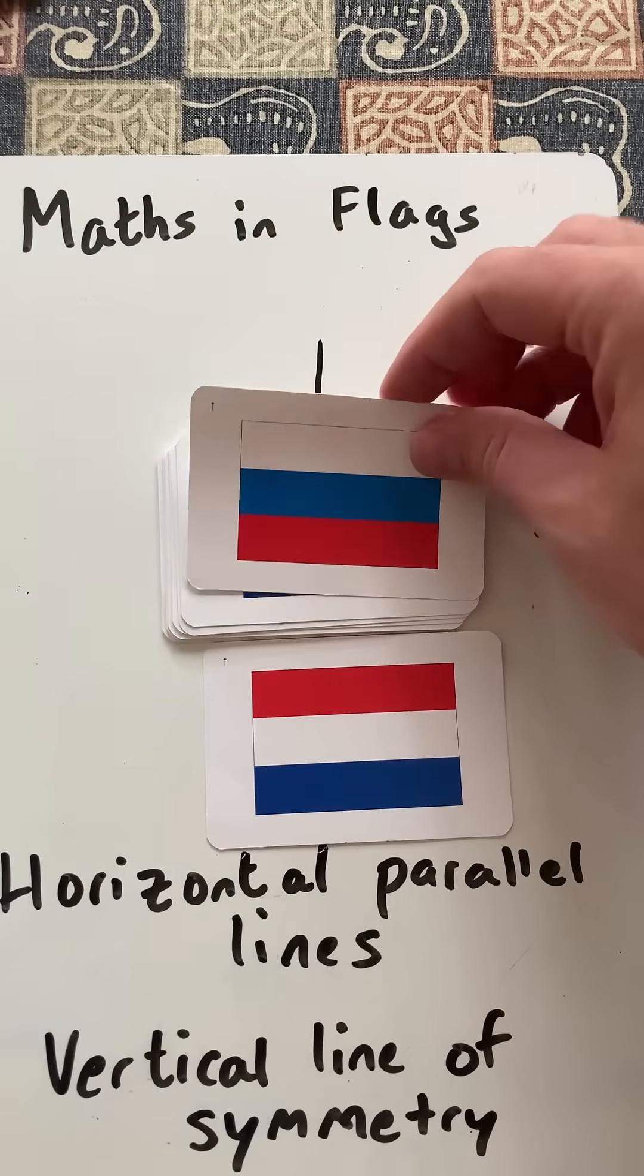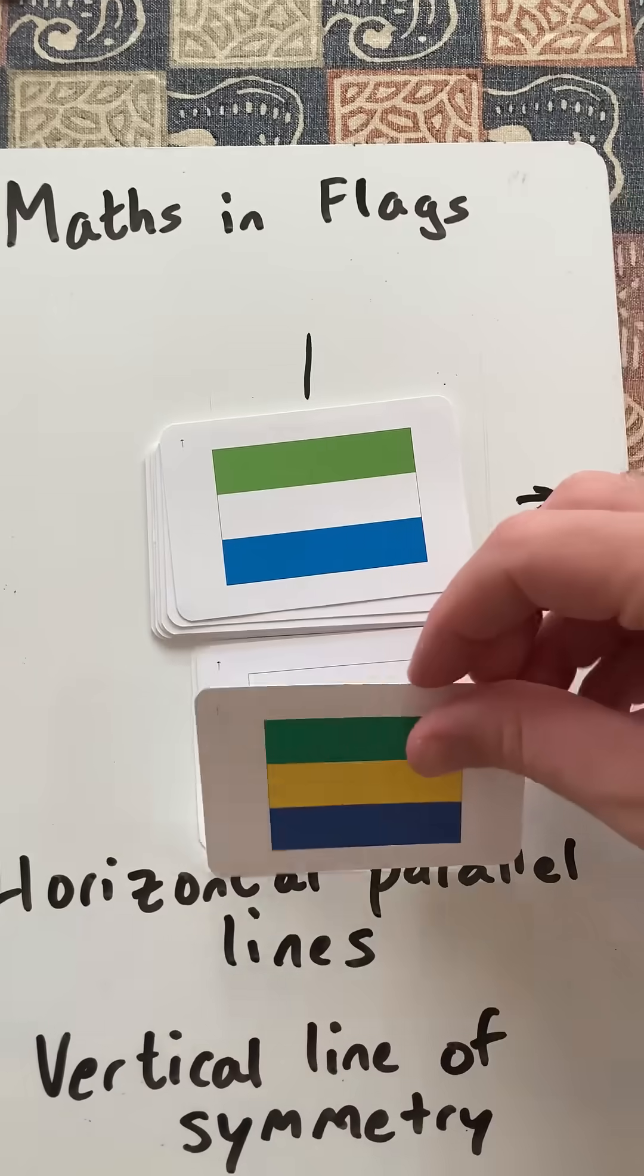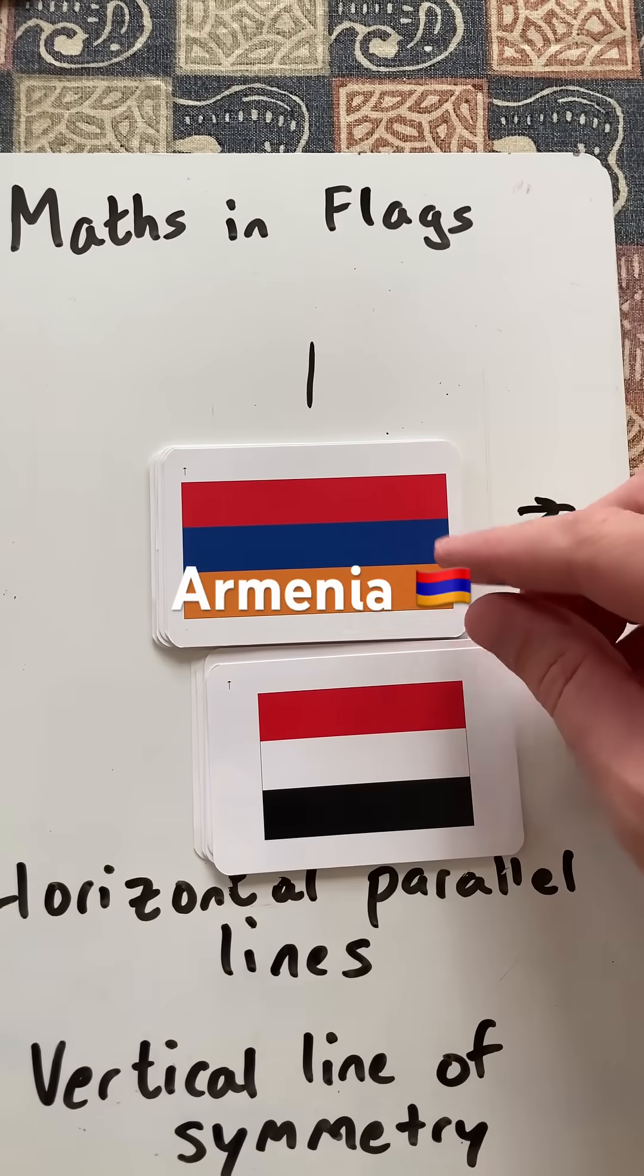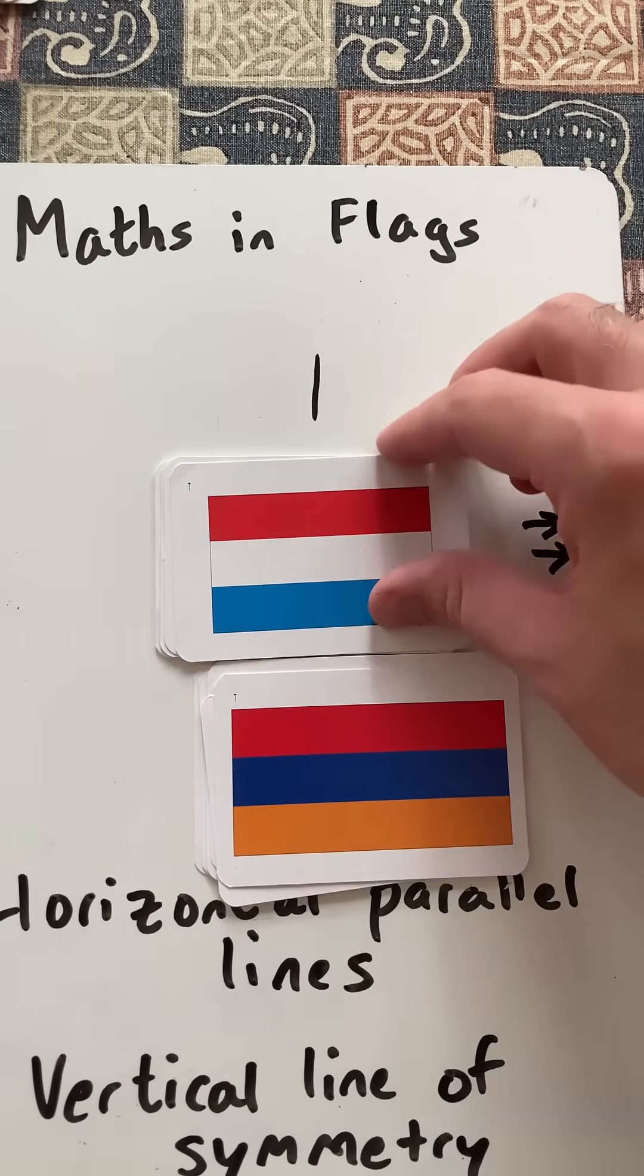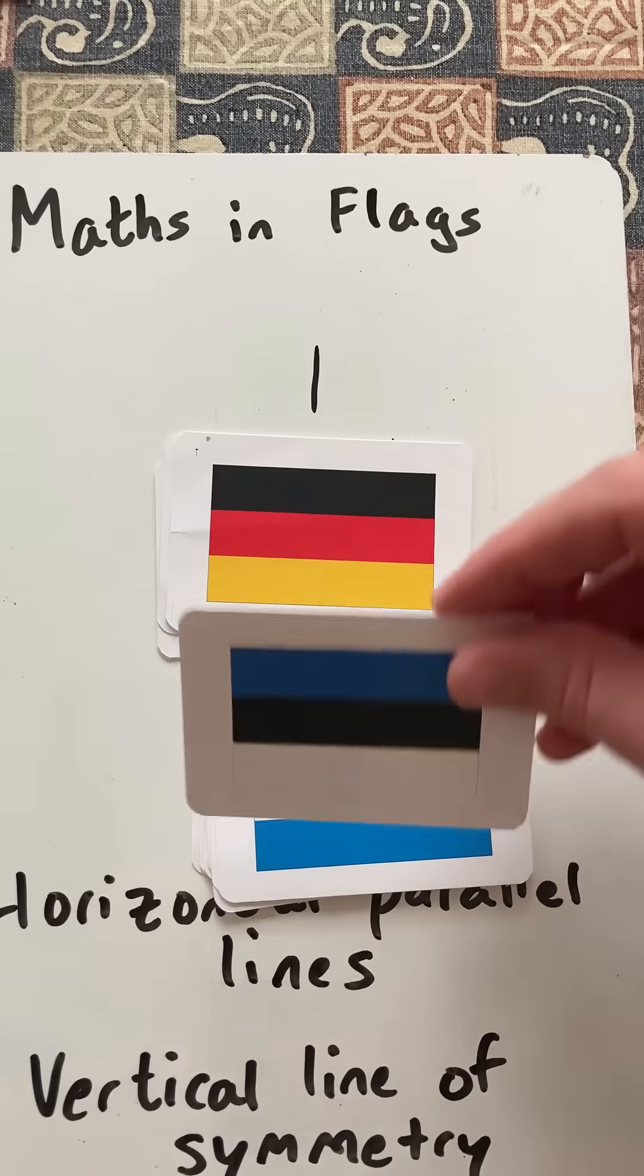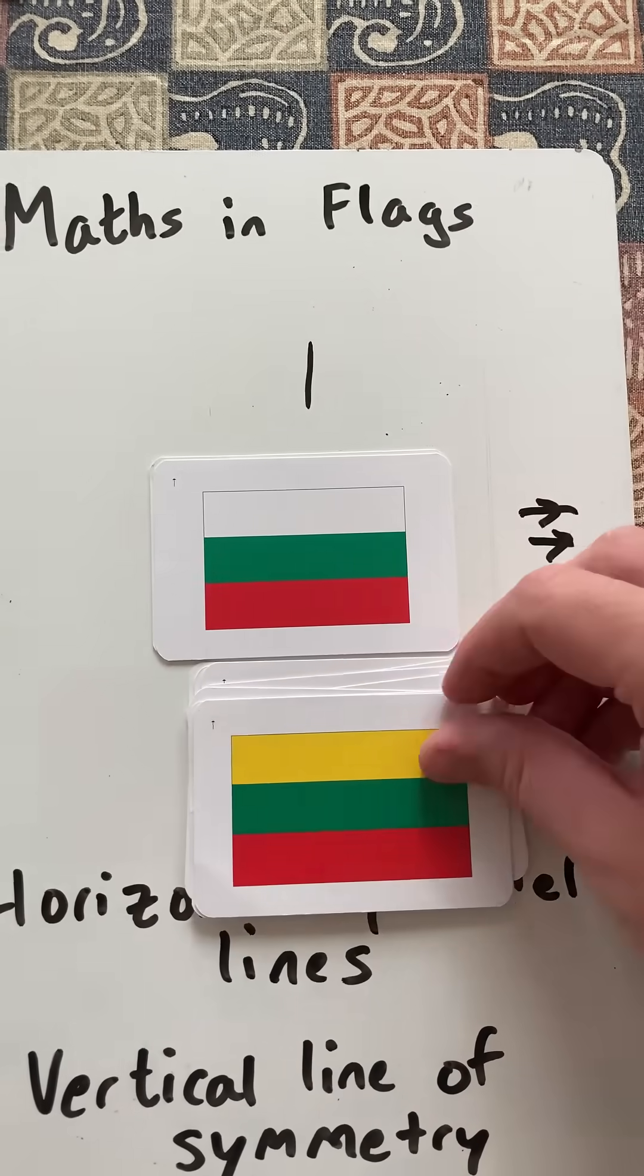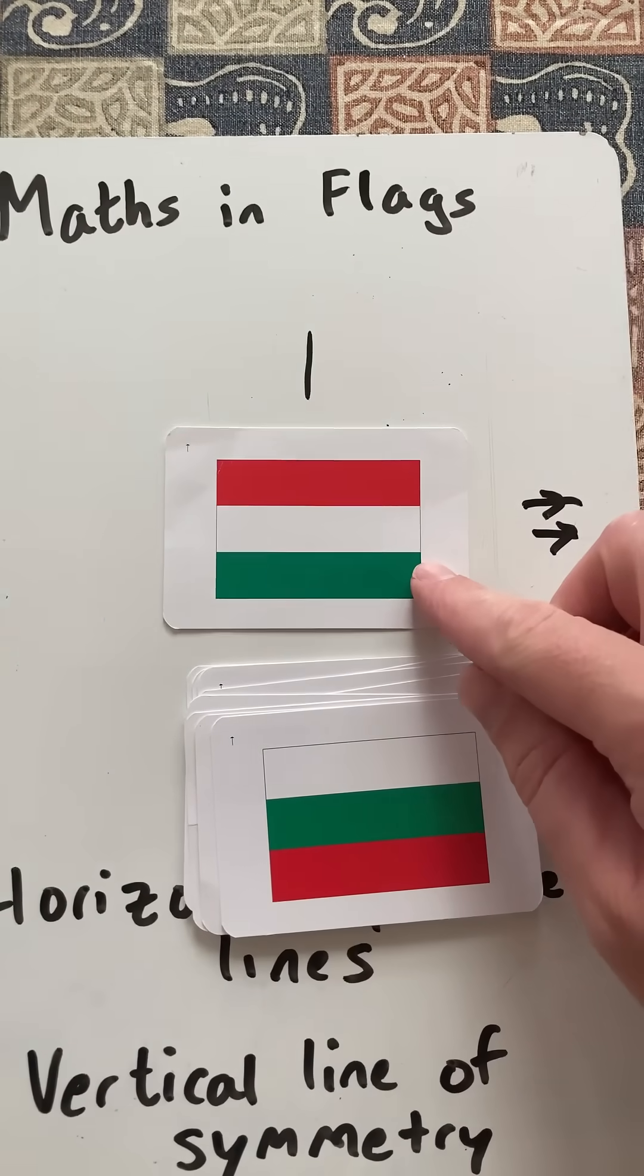Russia. Gabon. Sierra Leone. Yemen. Armenia. Luxembourg. Estonia. Germany. Lithuania. Bulgaria. And Hungary.